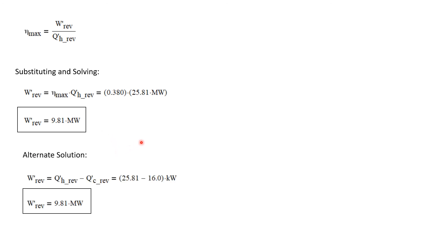Now we could calculate this a different way. We know from an energy balance that the power output is just the Qh minus Qc. And again, this is all for a reversible process. Well, Qh is 25.81 and Qc is 16. And so we end up with a power output once again of 9.81 megawatts. This is a typo here. This kilowatts should be megawatts.